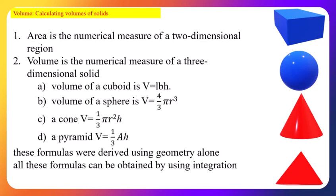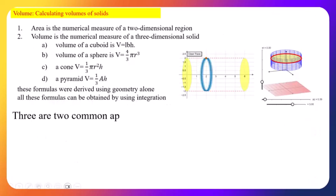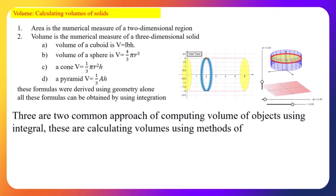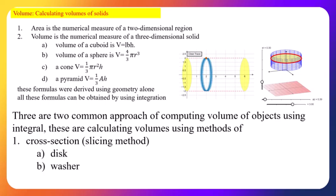The volume of a pyramid is (1/3) × base area × height. These formulas were derived using geometry alone, but all of them can also be obtained using integration. There are two common approaches: the method of cross-sections, also called the slicing method — which includes the disk method and washer method — and the shell method.